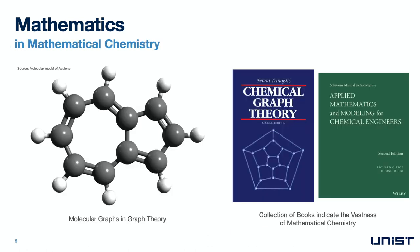Looking first at the intersection with chemistry, mathematics appears for example in the study of molecular structures, which can be expressed as graphs in mathematics. Here you can see the molecule for the organic compound usulene, which forms polygonal structures that are studied in mathematics. In fact, there is a whole research field called chemical graph theory at the intersection of mathematics and chemistry.